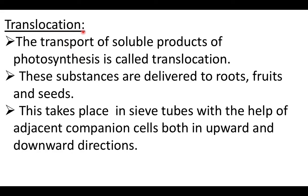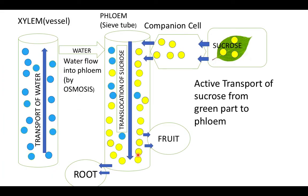Now we come to translocation — the transport of food in plants. The transport of soluble products of photosynthesis is called translocation. The destinations of translocation include roots, fruits, and seeds. The transport is carried out by sieve tubes and companion cells and is bidirectional. The food transported is in the form of sucrose.